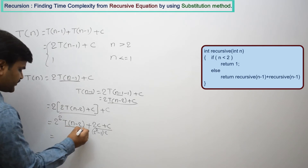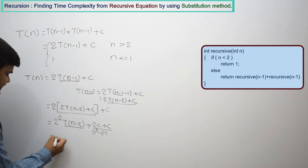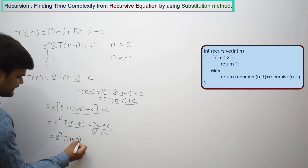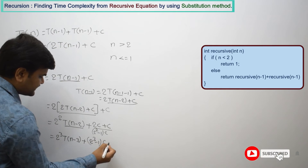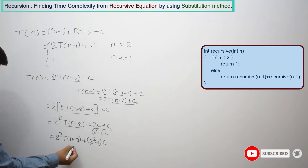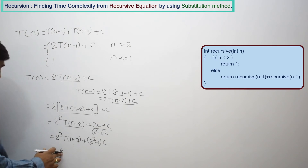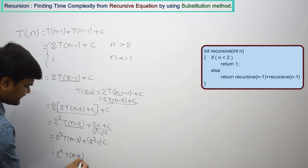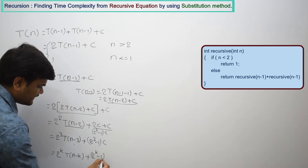Even if you try to find out the equivalent for T(n-2), you will get 2³ T(n-3) + (2³-1)c. Continuing this way, after k substitutions we get the general form: T(n) = 2^k · T(n-k) + (2^k - 1)c.